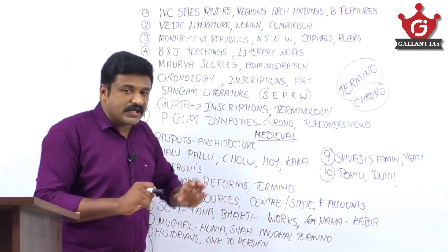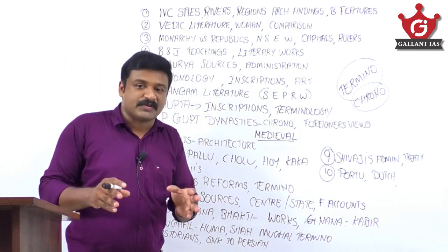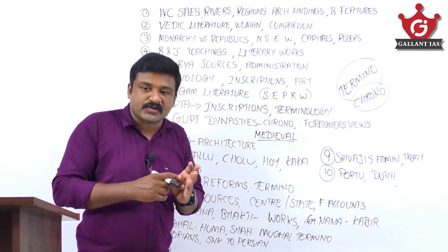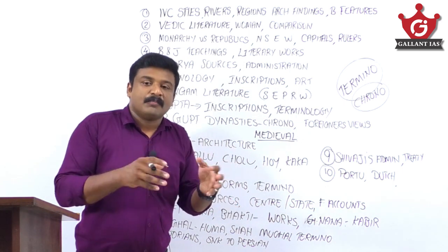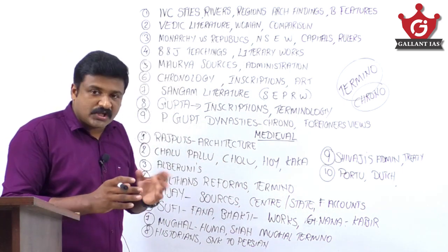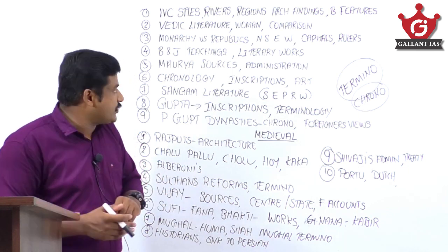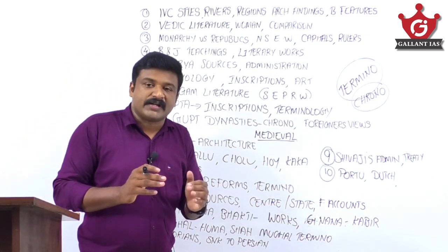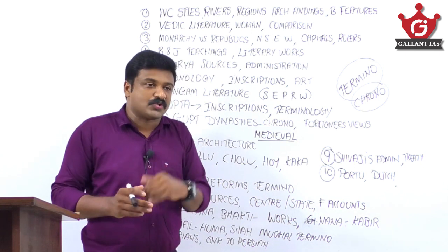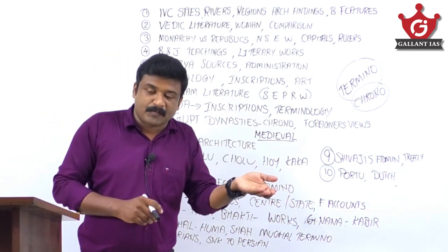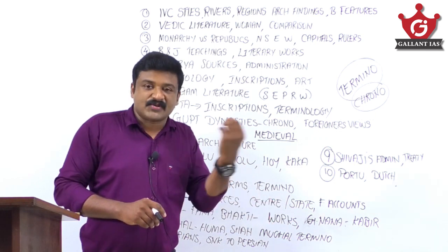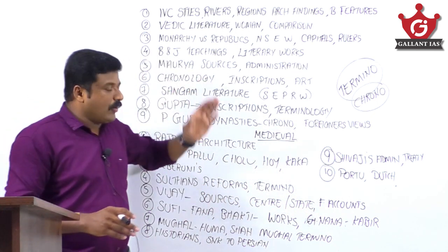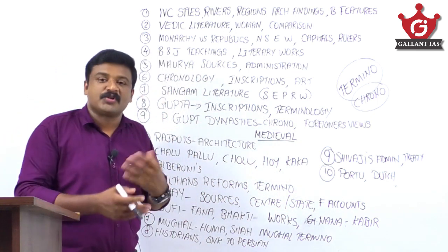Buddhism and Jainism is a blockbuster module — a minimum of one question is guaranteed. Focus on the classification of Buddhist and Jain literature, the teachings of Buddha and Mahavira, and their comparison. Most importantly, the literary works related to Buddhism and Jainism are important for you.